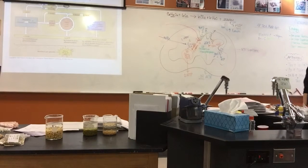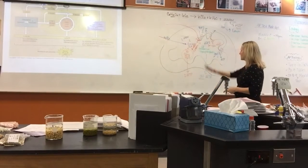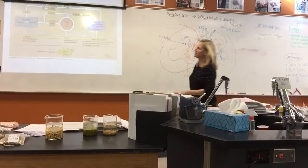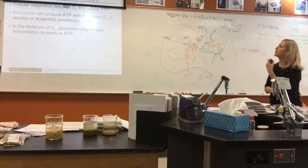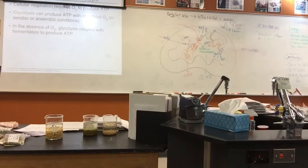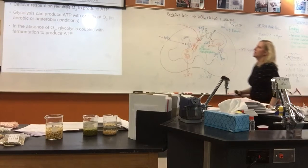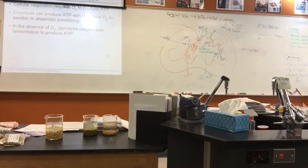Today we're going to look at what happens when a cell does not get oxygen. All of cellular respiration happens in the presence of oxygen and produces 36 to 38 ATP. The next topic is fermentation — it enables some cells to produce ATP without oxygen. Glycolysis can produce ATP with or without oxygen, and in the absence of oxygen, glycolysis couples with fermentation to produce ATP.